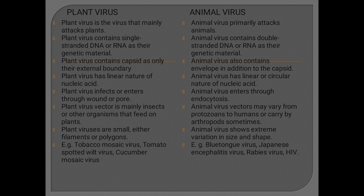Examples of plant viruses include tobacco mosaic virus, tomato spotted wilt virus, and cucumber mosaic virus. Examples of animal viruses include bluetongue virus, Japanese encephalitis virus, rabies virus, and HIV.